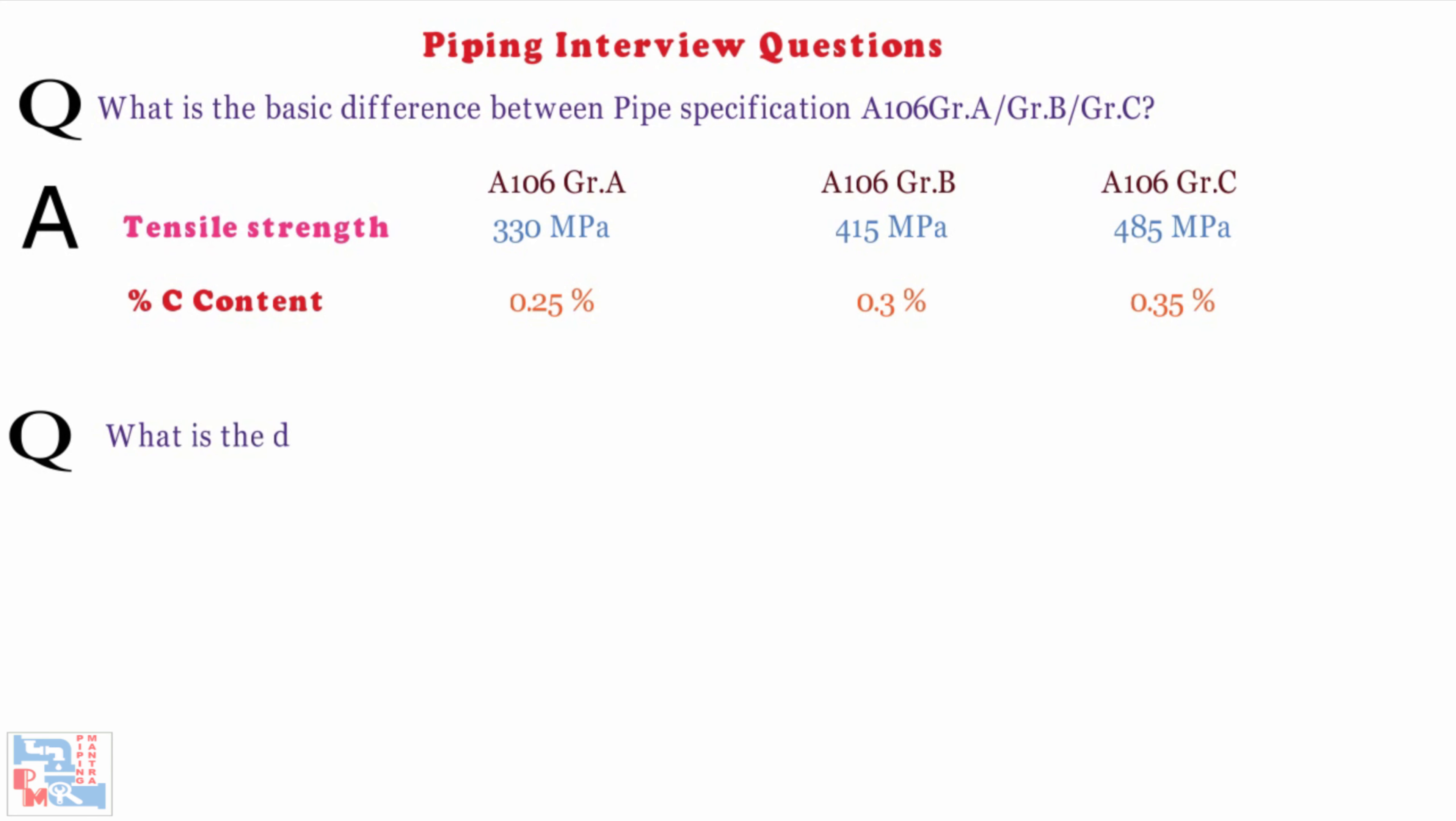Next, what is the difference between pipe specifications A312 TP 304 and A312 TP 304L, A312 TP 316 and A312 TP 316L? Difference is due to the carbon content. The letter L denotes lower percentage of carbon.